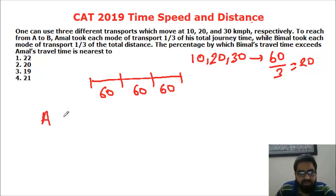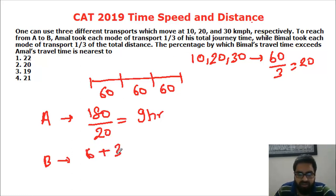So Amal's average speed is 20. Total distance 180 divided by 20, so time taken by Amal will be 9 hours. Time taken by Bimbal will be for first 60 kilometers travelling with speed of 10 so 6 hours, for second 60 kilometers will be 3 hours, for next it will be 2 hours.